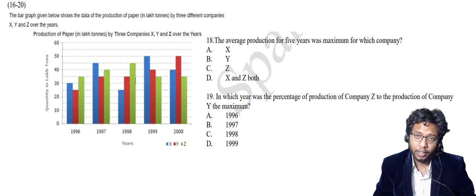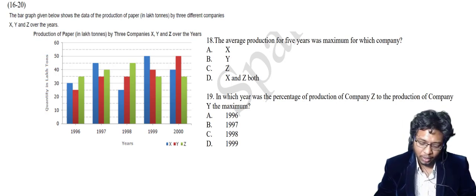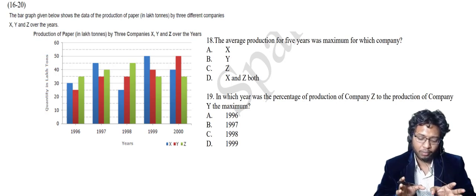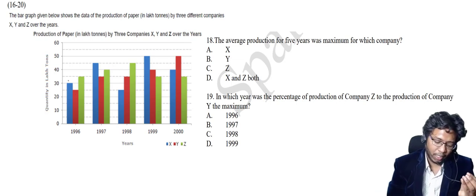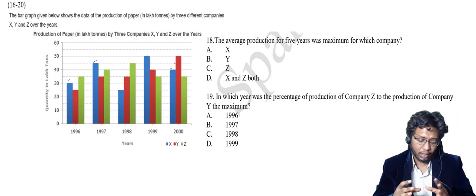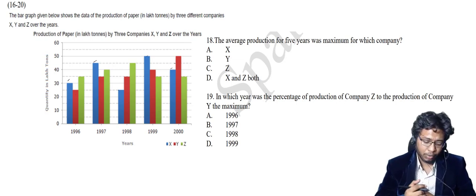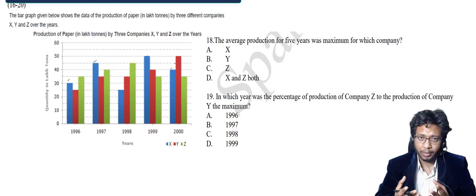The 18th question: the average production over 5 years was maximum for which company? The traditional way would be to add all values for X, divide by 5, then repeat for Y and Z — that takes time. I will tell you a method to solve this question by visual inspection itself.